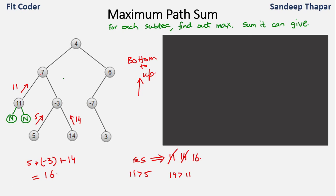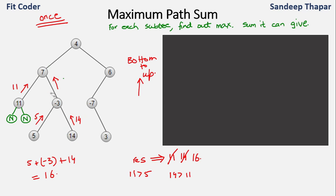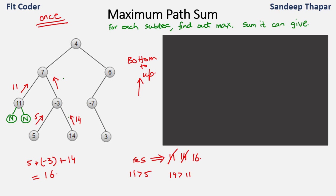We update the result to 16. For the right subtree of node 7, a node can be counted only once, so we cannot have a path where minus-3 is counted twice. Either the path goes through 7, minus-3, and 14, or through 7, minus-3, and 5. The subtree rooted at minus-3 can provide a maximum of 14 − 3 = 11. So at node 7, lsum is 11 and rsum is also 11, giving 7 + 11 + 11 = 29. Since 29 > 16, we update the result to 29.